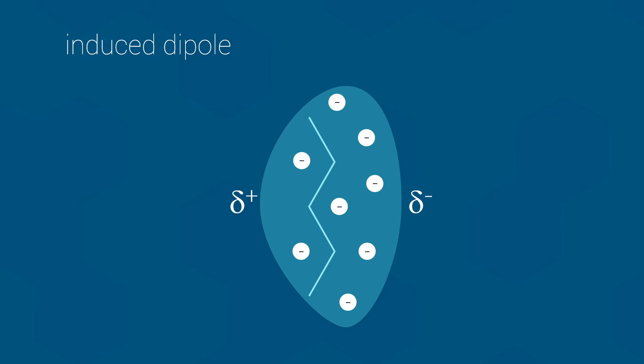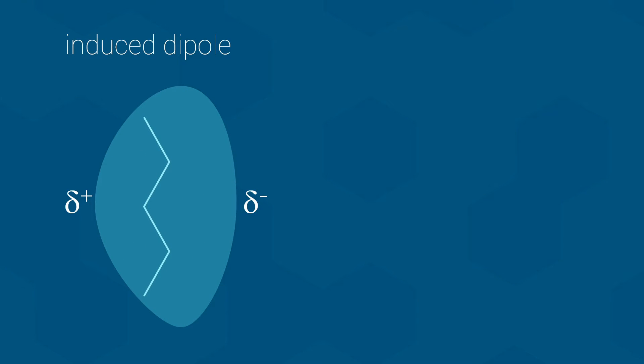Well, imagine that a second molecule is sitting nearby. And for this I will remove the electrons to keep it clean. In this situation, we now have a weak partial negative dipole approaching the second molecule.